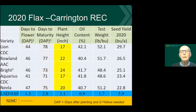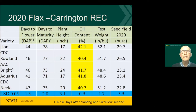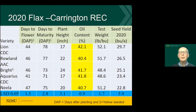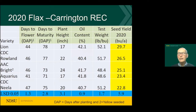Plant height is often a proxy for standability, but that is not always the case — sometimes a taller variety may also have good stalk strength. There is an oil content number for flax, and importantly you can only compare oil content within a location, such as Carrington or Minot, not between trials. Lastly, the main selection factor is yield, and at the bottom you'll see a value called an LSD — that number tells you there is a significant difference if the difference between two varieties is higher than that LSD value.